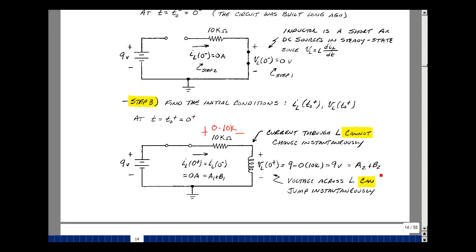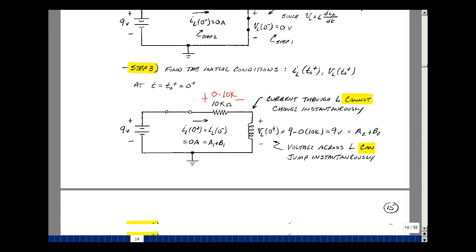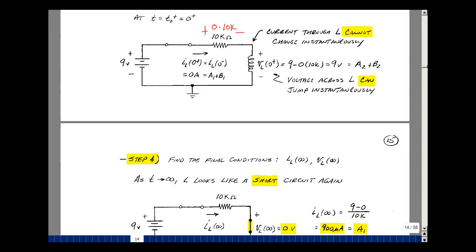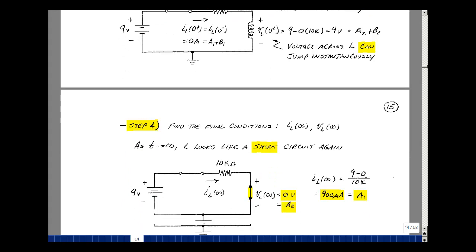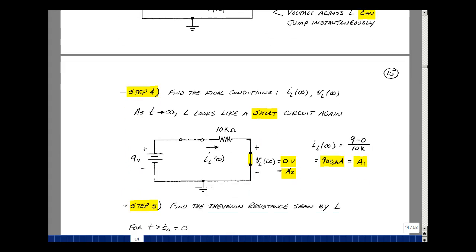This is going to be some a2 plus b2 times e to the 0, and e to the 0 is equal to 1. So I have one equation and two unknowns for my a's and my b's. I need another equation. Just like before, it'll be easiest if we take a look at as time approaches infinity.